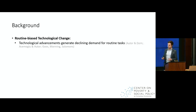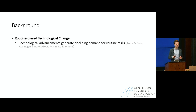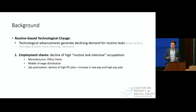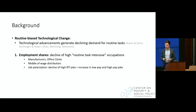I'll say a couple words about this idea of routine-biased technological change — the idea that technological advancements generate declining demand for routine tasks. We know from prior research that routine-biased technological change can generate a couple types of consequences. The first relates to employment shares. For occupations that are more routine in nature — your manufacturers, your office clerks — we've seen over the last few decades a decline in their employment shares relative to other types of occupations.